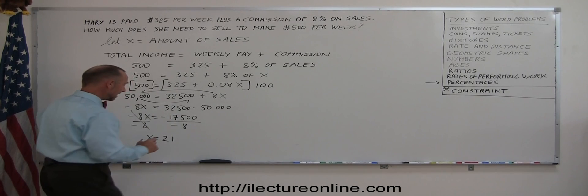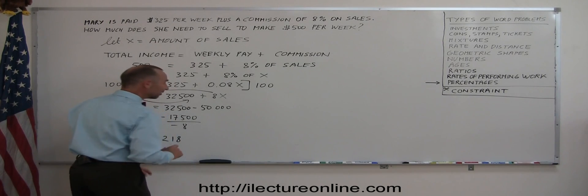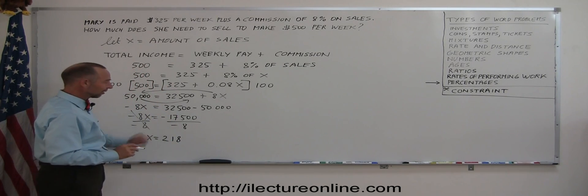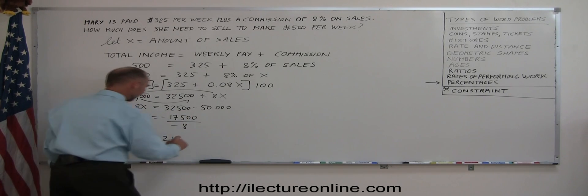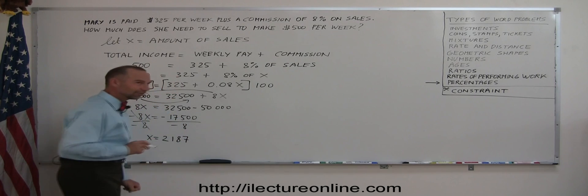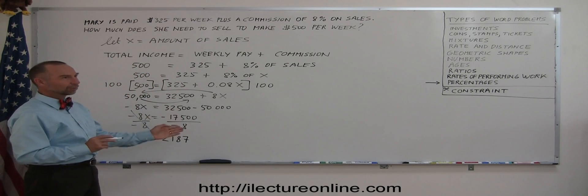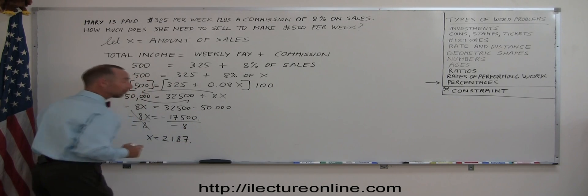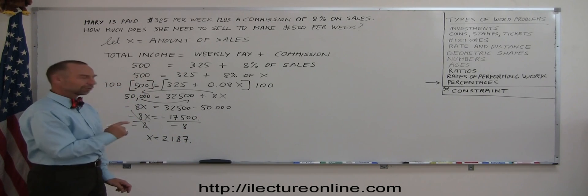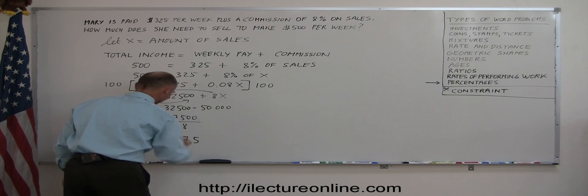8 goes into 70 eight times. 8 times 8 is 64. 64 subtract from 70 is 6. Drop down to 0. 8 goes into 60 seven times. 7 times 8 is 56. That leaves me a remainder 4. Drop down to the next 0. But now we're past this point right here. So we need to put the decimal in place. 40. 8 goes into 40 five times. And X equals that.